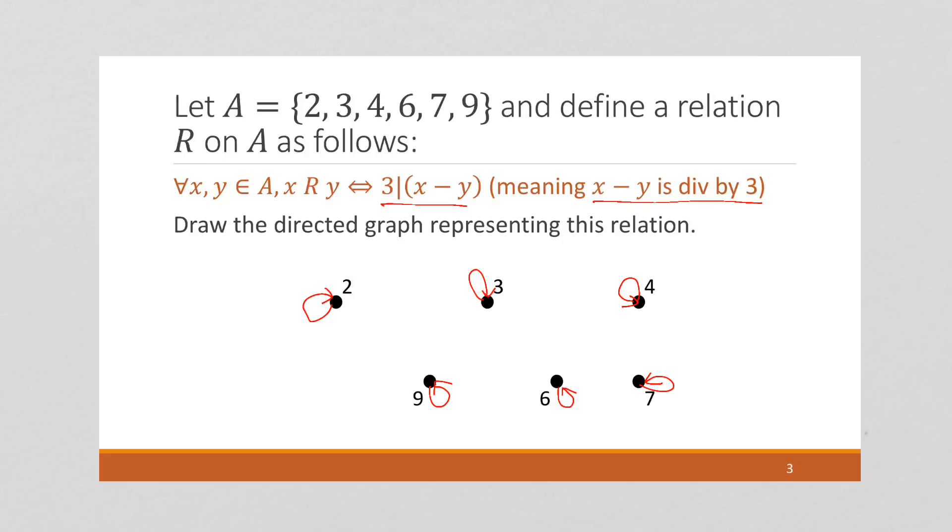Two minus four is going to be negative two, not divisible by three. And so on. And if you walk through two with each one of these, you're going to find none of them work. Two is, in fact, an isolated vertex.